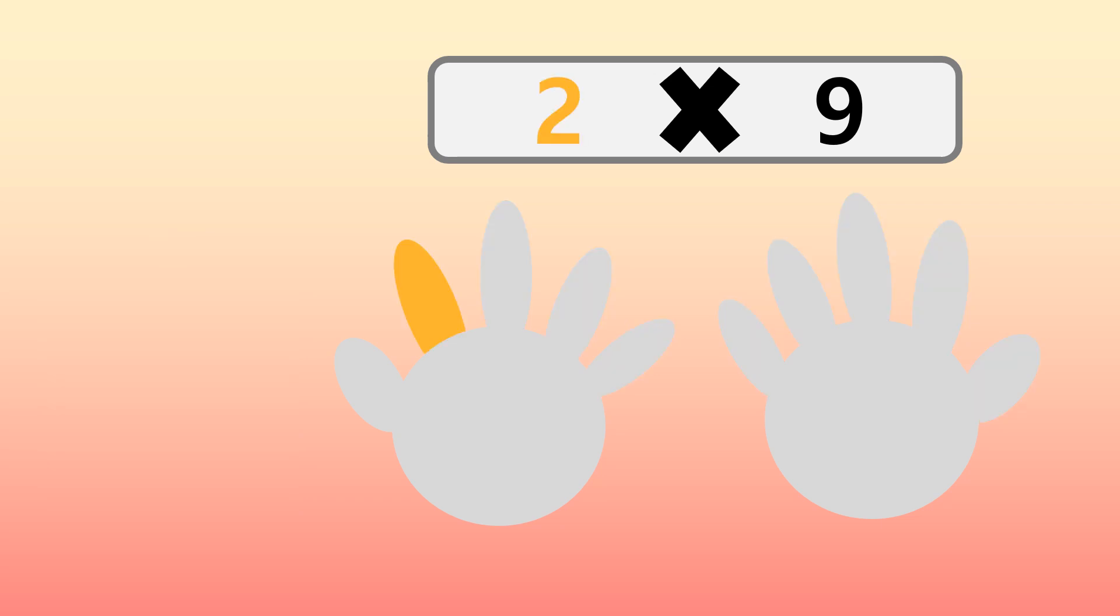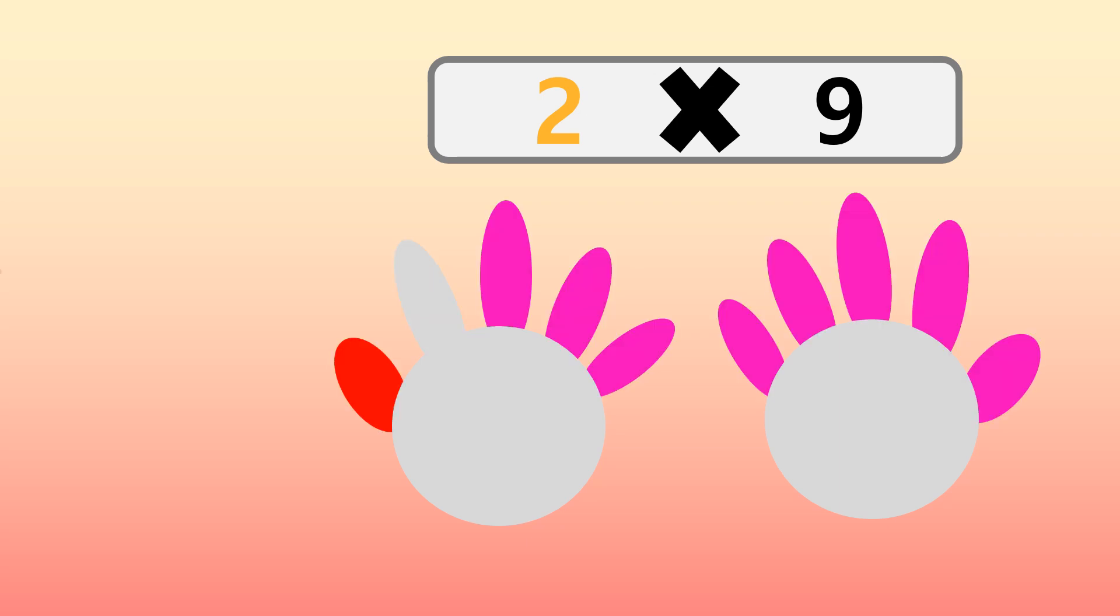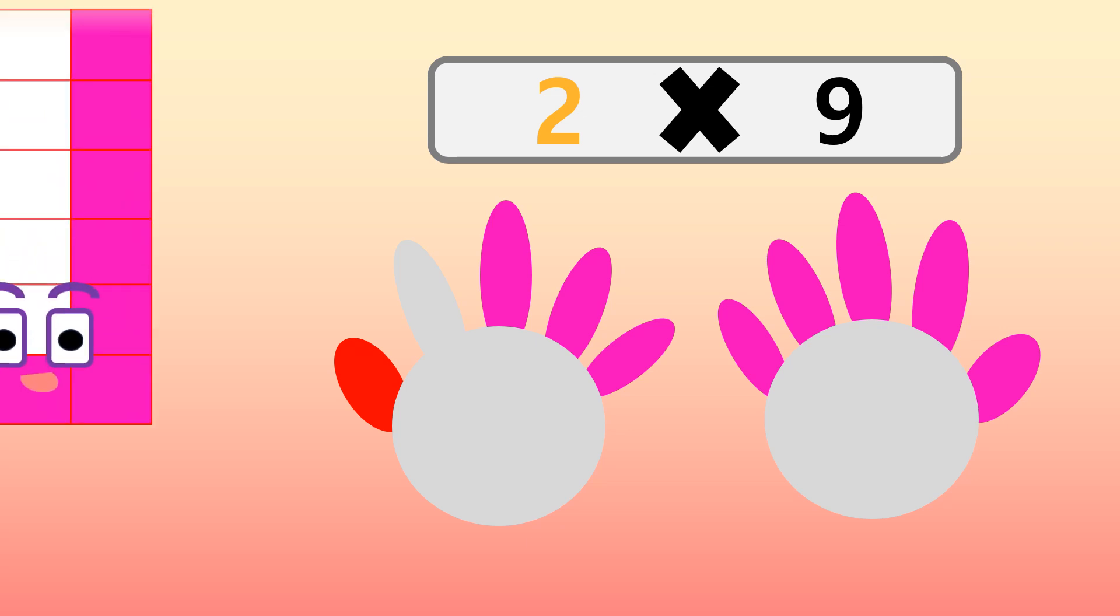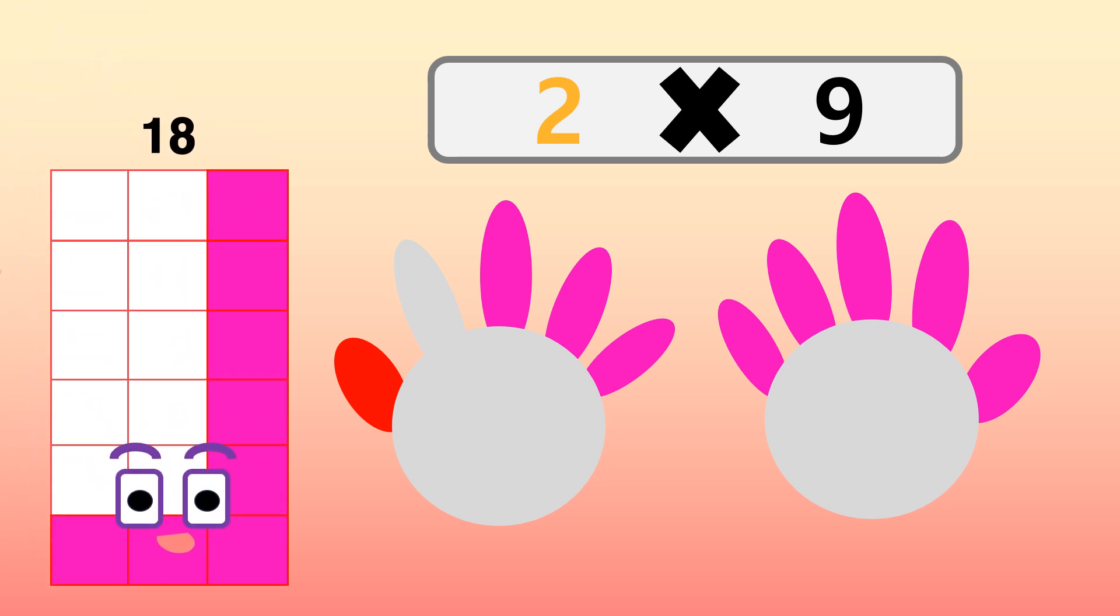Put down your second finger. How many fingers to the left of the one we put down? 1. How many to the right? 8. That makes 8 fingers. 18.